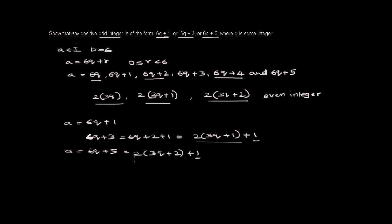Because this number 6k plus 1, 6k plus 3, or 6k plus 5 are not divisible by 2, this will become an odd integer.